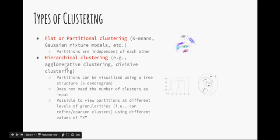Hierarchical clustering, for example agglomerative or divisive clustering. The partitions can be visualized using a tree structure, also called a dendrogram. K denotes the number of clusters input. It is possible to view partitions at different levels of granularities—that is, we can refine or coarsen clusters using different values of K.